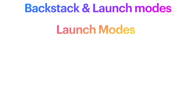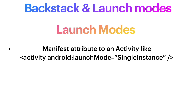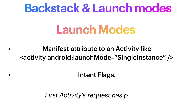Let's talk launch modes. We can define them in two ways. First, as a manifest attribute where the activity declares how it should associate with tasks when it starts. And second, as intent flags in the intent object with which we will start the activity, where we declare how the new activity will associate with the current task. Both the target activity can decide for themselves, but also the activity that launches the target can decide for it. In the case that both are declaring the behavior, the first activity's request is honored over the target's.